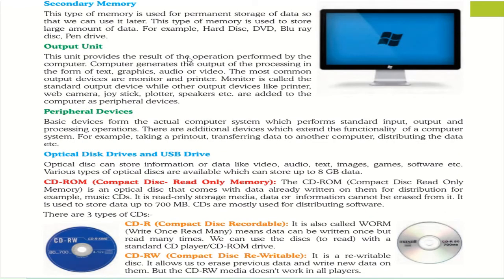Next is secondary memory. Secondary memory is used for permanent storage. If you want to store data for later use, you need additional memories such as pen drives, hard disk, or DVD. Data can be stored permanently in these storage devices and used later.